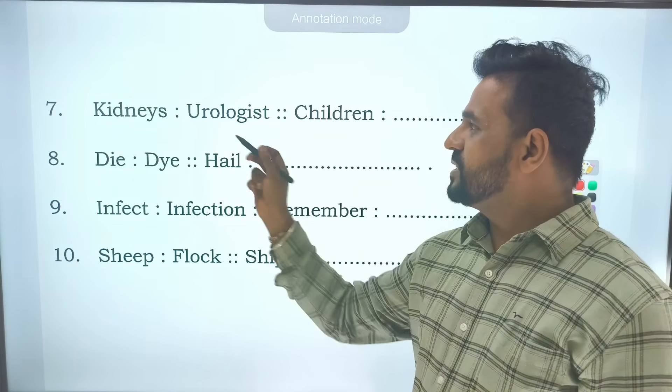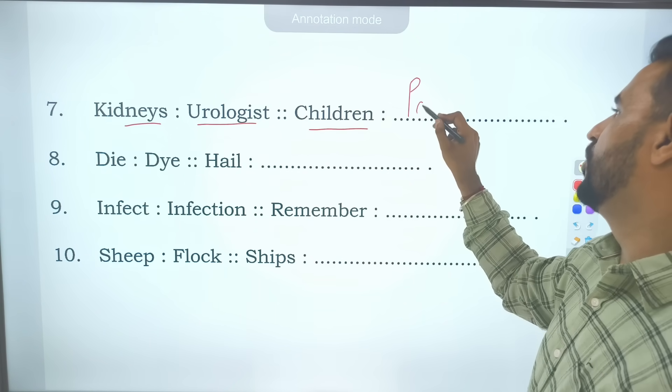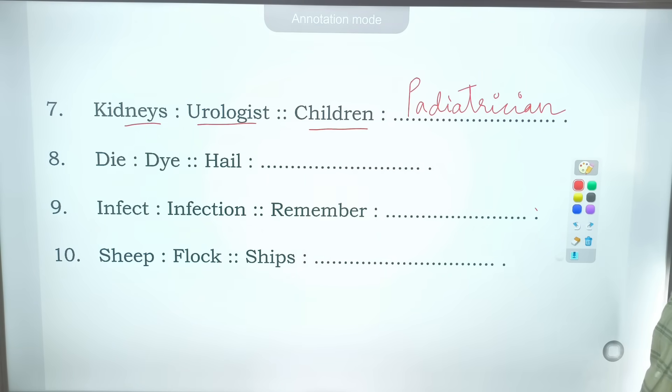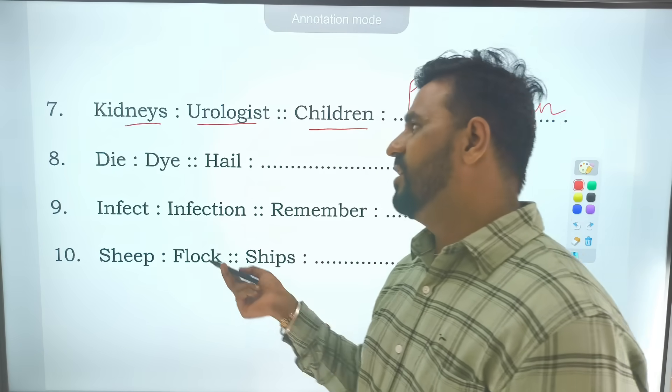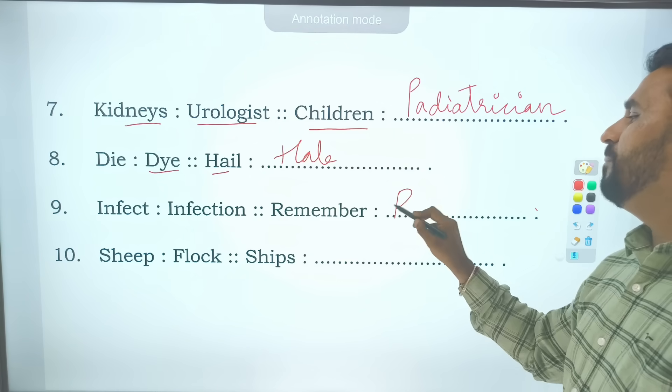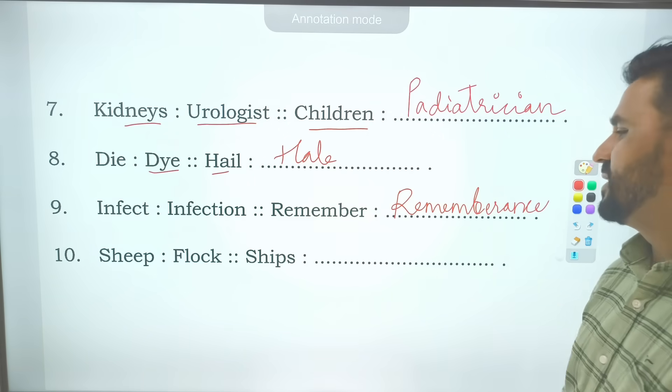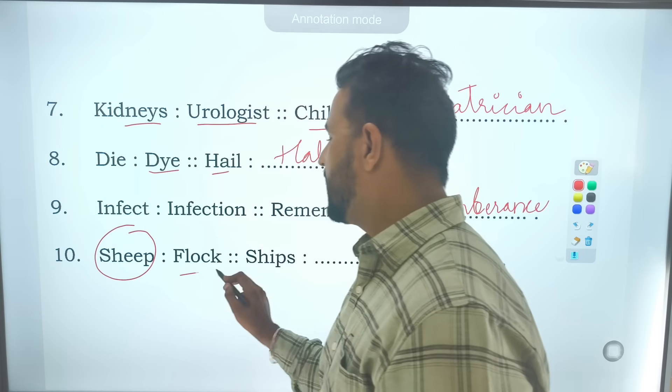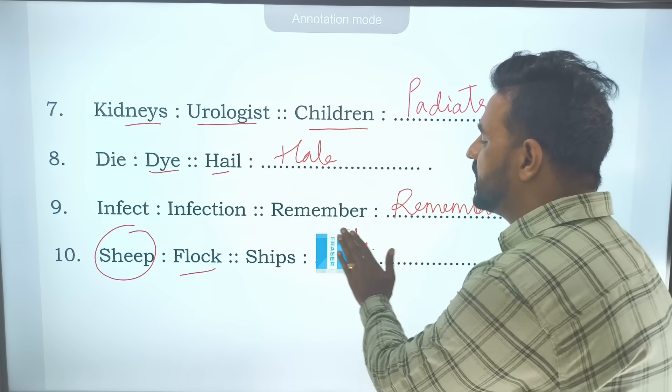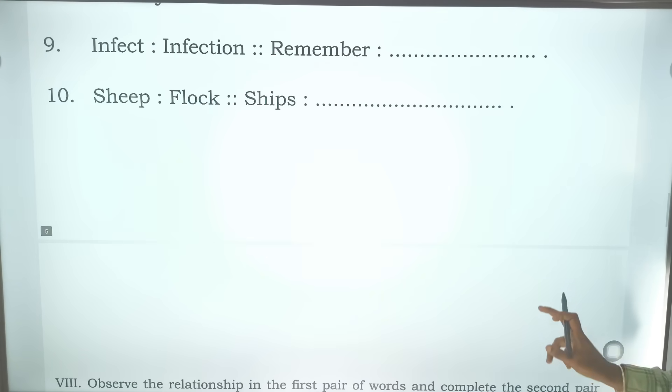Kidneys, the person who studies kidneys is urologist. The person who studies the children is pediatrician. Pediatrician or pediatrist is a person who studies about the children. Die, then hail is actually hail. Infect, infection noun form. Remember, remembrance. Collection of sheep we call it flock. Collection of ships we call it fleet. F-L-E-E-T is the answer.